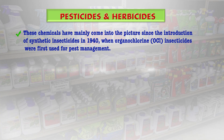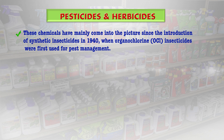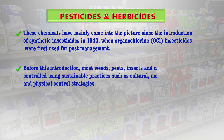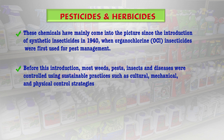These chemicals have been coming into the picture since the introduction of synthetic insecticides in 1940 — the first being the organochlorine insecticide used for pest management. Before organochlorine insecticides, weeds, pests, insects and diseases were controlled using sustainable natural practices like cultural, mechanical and physical controlling strategies. Previously, there were no synthetic pesticides or fertilizers; only natural ones were used.